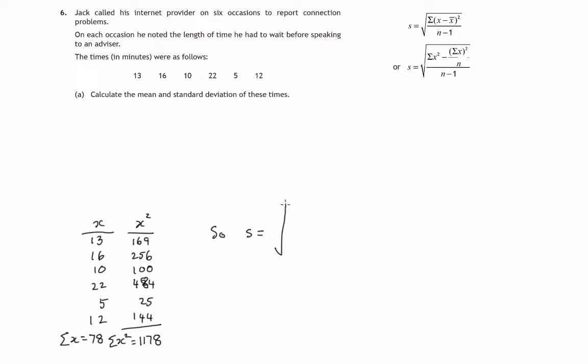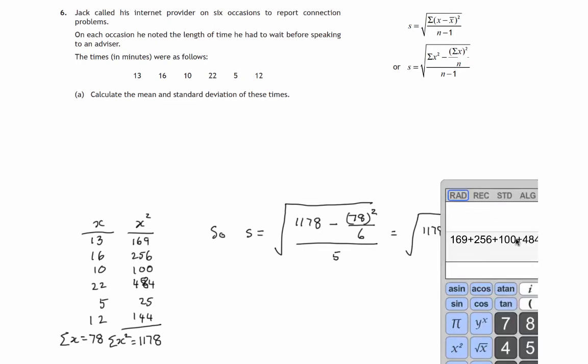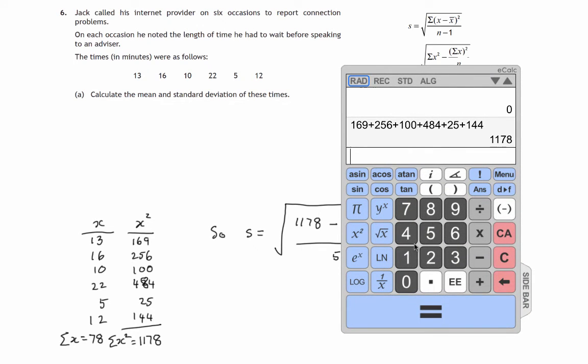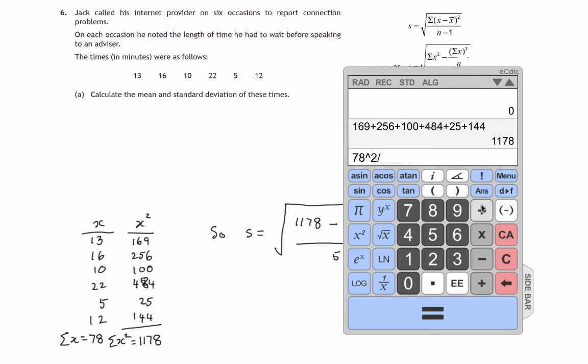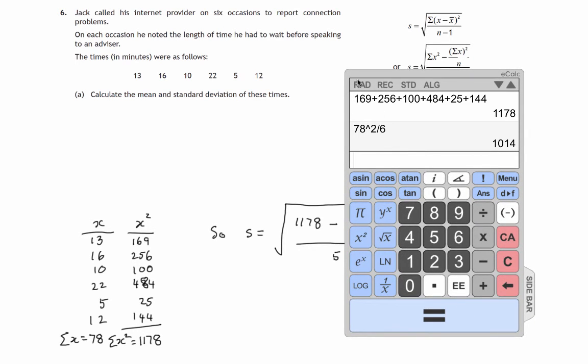So that takes care of that divided by n. We have everything calculated. So the standard deviation is the square root of sigma x squared, which is 1178, minus the sum of the data values squared - that's 78 squared - divided by n, that's the number of data values which is 6, over one less than the number of data values, which would be 5. So there's some calculations we need to do. It's 1178 minus 78 squared over 6, that's 78 squared divided by 6, that's 1014.